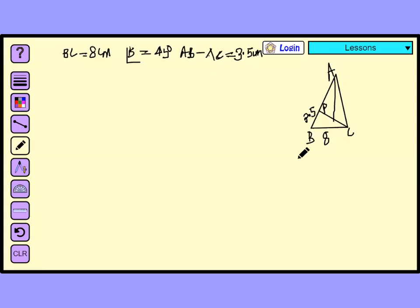So, this is our construction. ABC is equal to 8 centimeter, B angle is equal to 45 degree, AB minus AC is equal to 3.5 centimeter. We have to draw the construction.